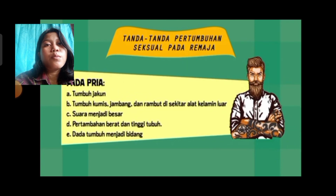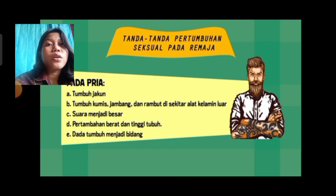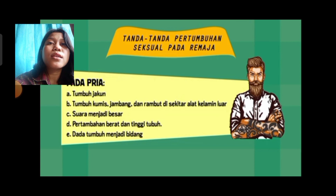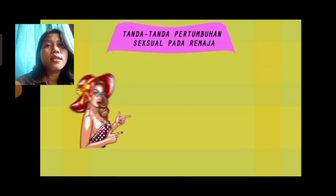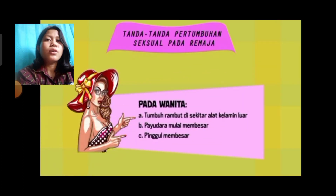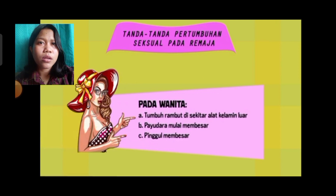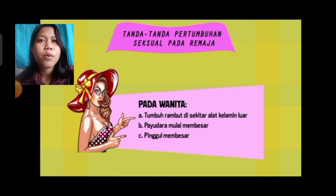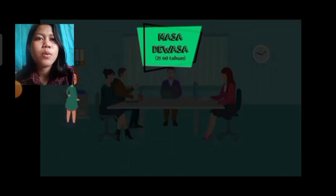Tanda-tanda pertumbuhan seksual pada remaja pria: tumbuh jakun, tumbuh kumis, jambang, dan rambut di sekitar alat kelamin luar, suara menjadi besar, pertambahan berat dan tinggi tubuh, serta dada tumbuh menjadi bidang. Pada wanita: tumbuh rambut di sekitar alat kelamin luar, payudara mulai membesar, dan pinggul membesar.